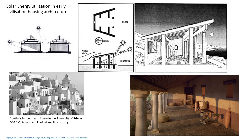Here we see more examples of housing architecture utilizing solar energy by different civilizations. The front part of the house — the roofing — is extended a little longer so as to block solar incidence during the noon part of the day and save the housing interiors from extra heat, but during winter the lower-angle solar radiation could still enter into the house to keep the interiors warm.